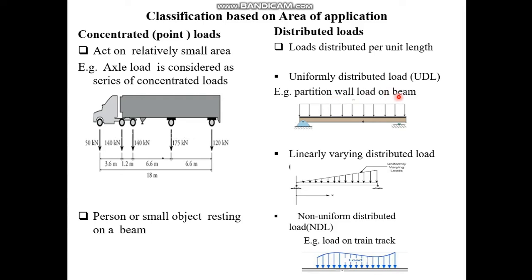The other classification is linearly varying distributed loads. These loads vary linearly across the structure. They can also be represented by a trapezoidal distribution where the load will have a minimum intensity and a maximum intensity.